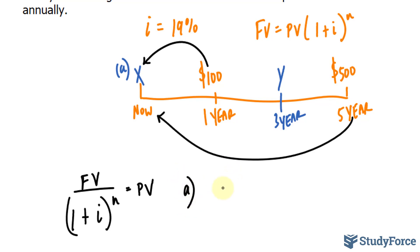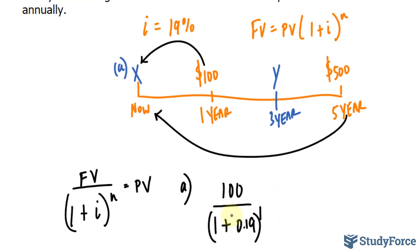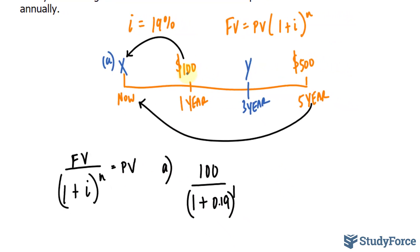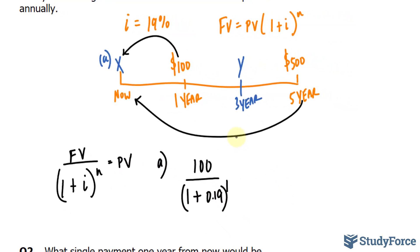So for question A, we have the future value being 100 over 1 plus 0.19, and we raise that to the number of periods. Since it's being compounded annually from one year to now, that's one period. And so we'll find the answer to this. It will give us the present value for that particular debt. And we have to sum that to the present value of this debt.